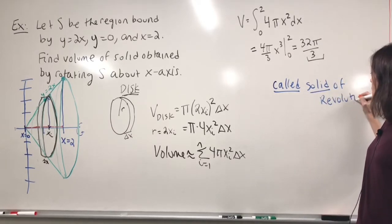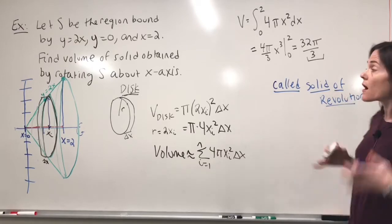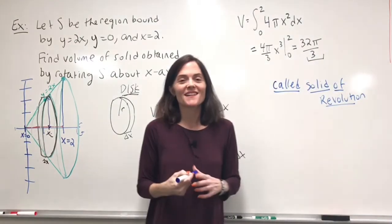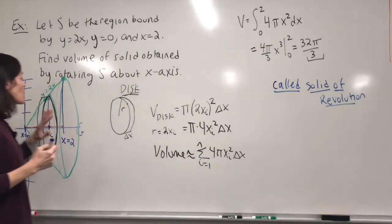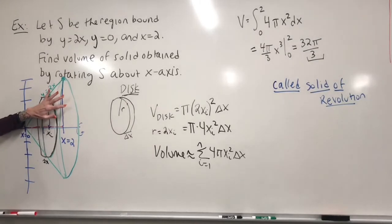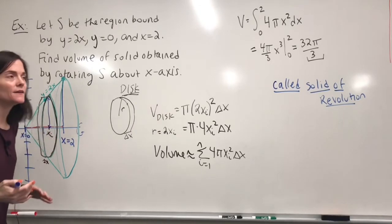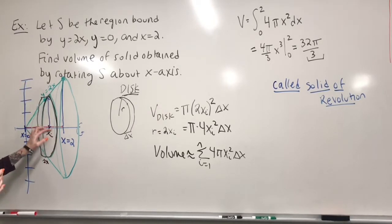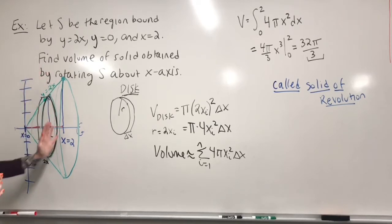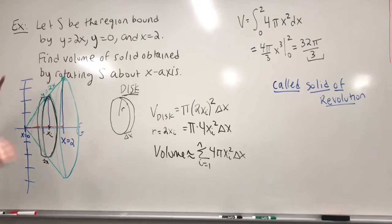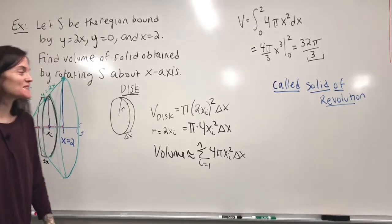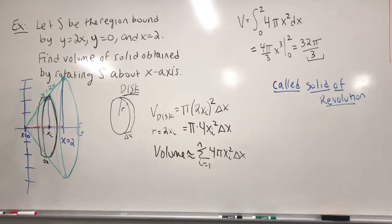This solid is called a solid of revolution. Almost all of the examples in this section are solids of revolution. The way you get one is you take a region and revolve or rotate it about a line — and it doesn't have to be an axis. You can revolve about x equals 2, x equals negative 1, y equals 5, and all kinds of things.